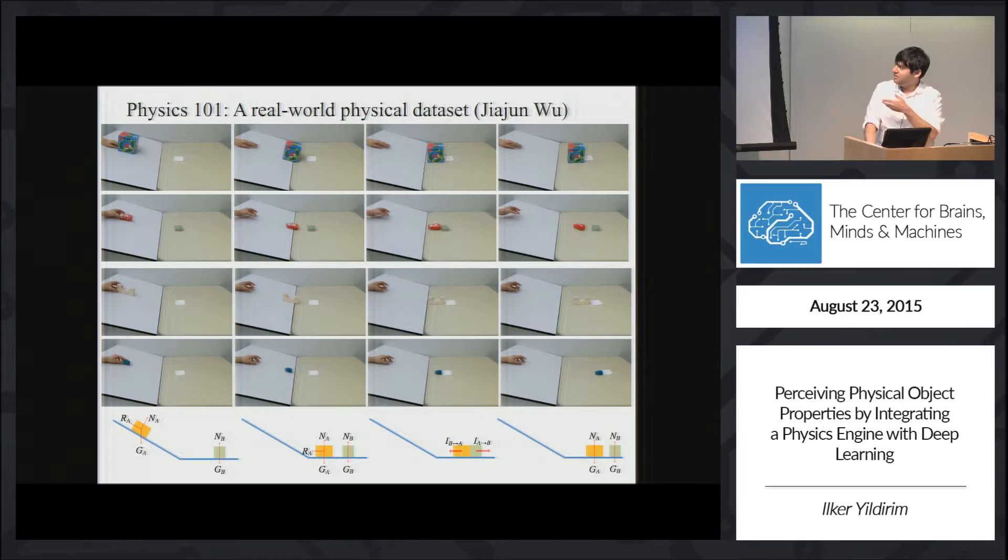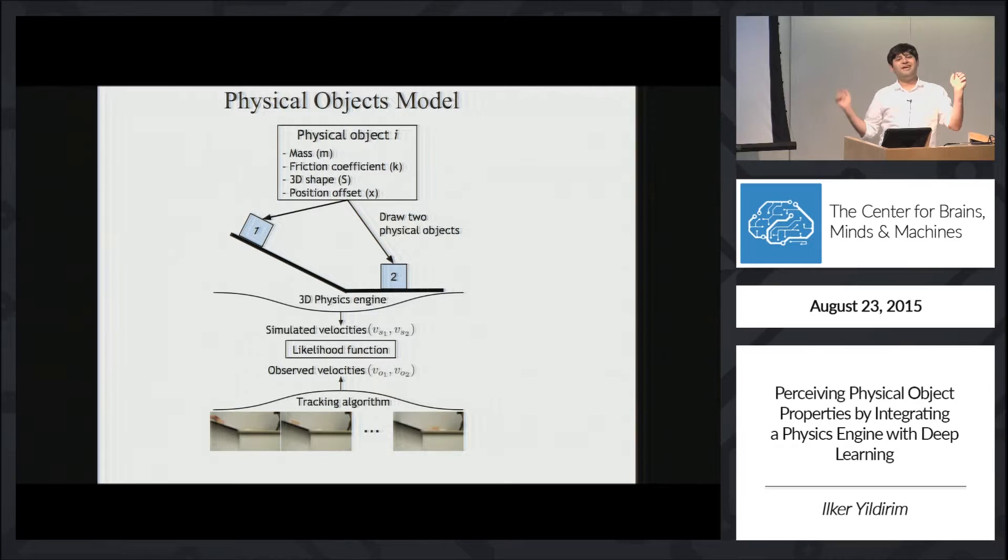Even though it is a basic setup, there is a lot of physical interaction taking place. We assert that what happens when a perceiver looks at things of this sort is that they recover physical objects models underlying these dynamical actions. In the model, there is a physical object component where each object is described by some physical attributes, and then this is given to a 3D physics engine such as Bullet to get some simulated velocity profiles.